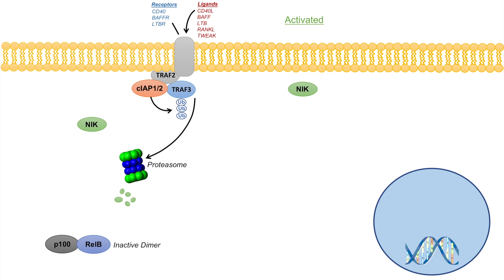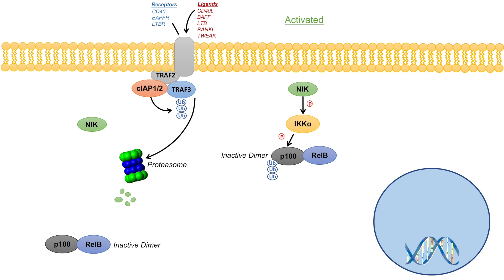When NIK levels are increased, NIK is able to perform its function. As the name suggests — NF-kappa-B-inducing kinase — it actually phosphorylates IKK-alpha. When IKK-alpha has been phosphorylated, it interacts with the P100-REL-B inactive dimer. IKK-alpha itself then acts as a kinase and phosphorylates P100. This leads to P100 becoming ubiquitinated and then degraded in the proteasome.